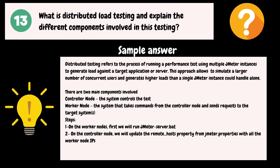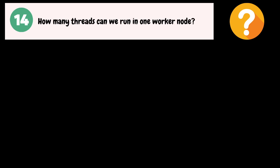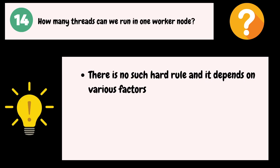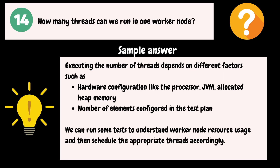First, on the worker node, we run the JMeter Server bat file if it is Windows, or the JMeter dash server script if it is Linux. Then on the controller node, we update the remote host property in the JMeter properties file with all the worker node IPs, and then start the test. How many threads can we run on one worker node? In general, there is no hard rule that applies to all worker nodes. The number of threads depends on factors such as hardware configuration like the processor, JVM allocated heap memory, and the number of elements configured in the test plan. We can run some tests to understand the worker node resource usage and then schedule the appropriate number of threads accordingly.